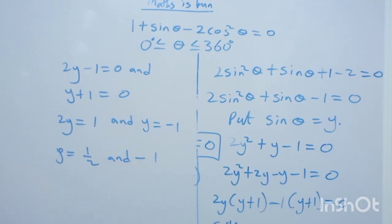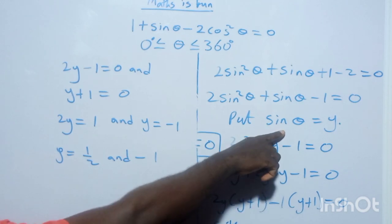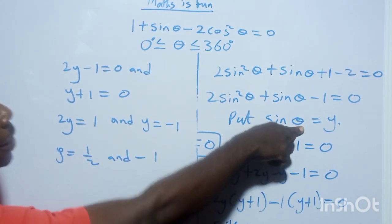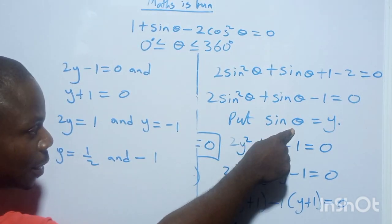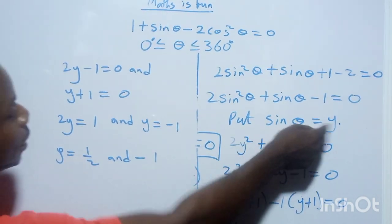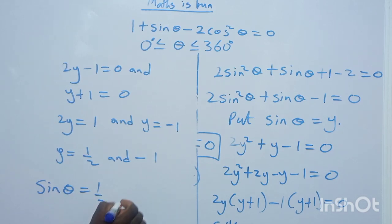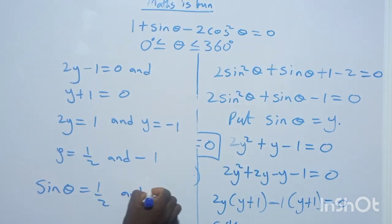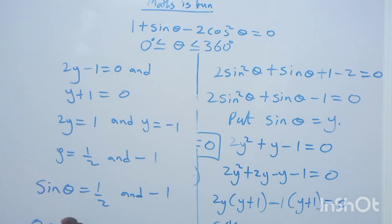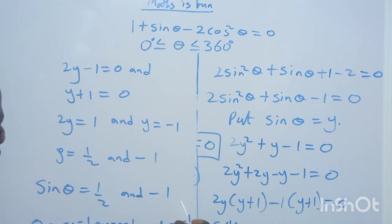Remember you already substituted y = sinθ, so wherever you see y, put sinθ back in. So sinθ = 1/2 and sinθ = −1. Therefore θ = arcsin(1/2) and θ = arcsin(−1).